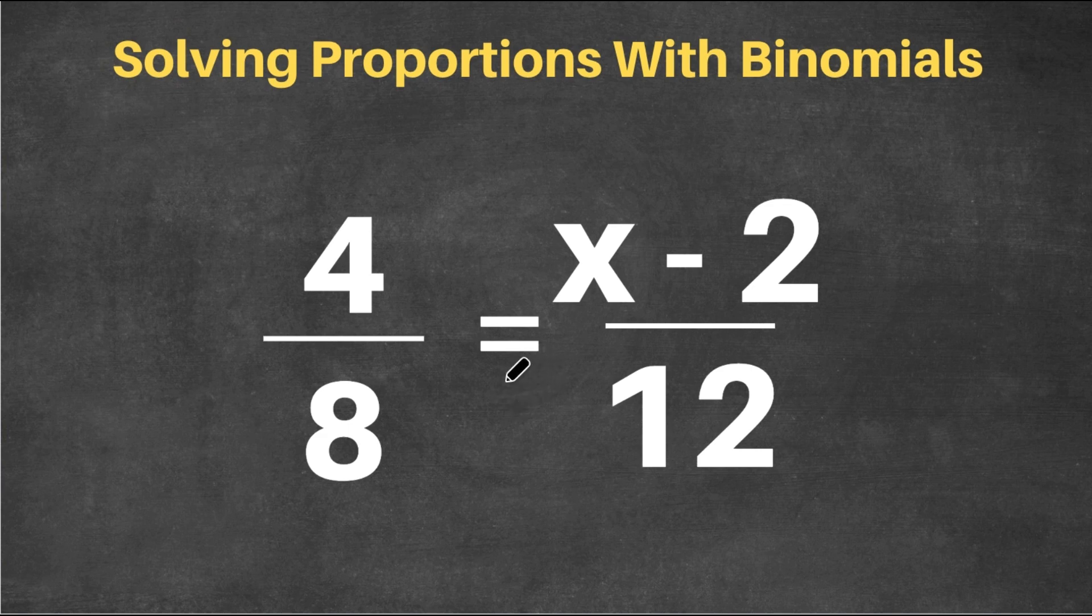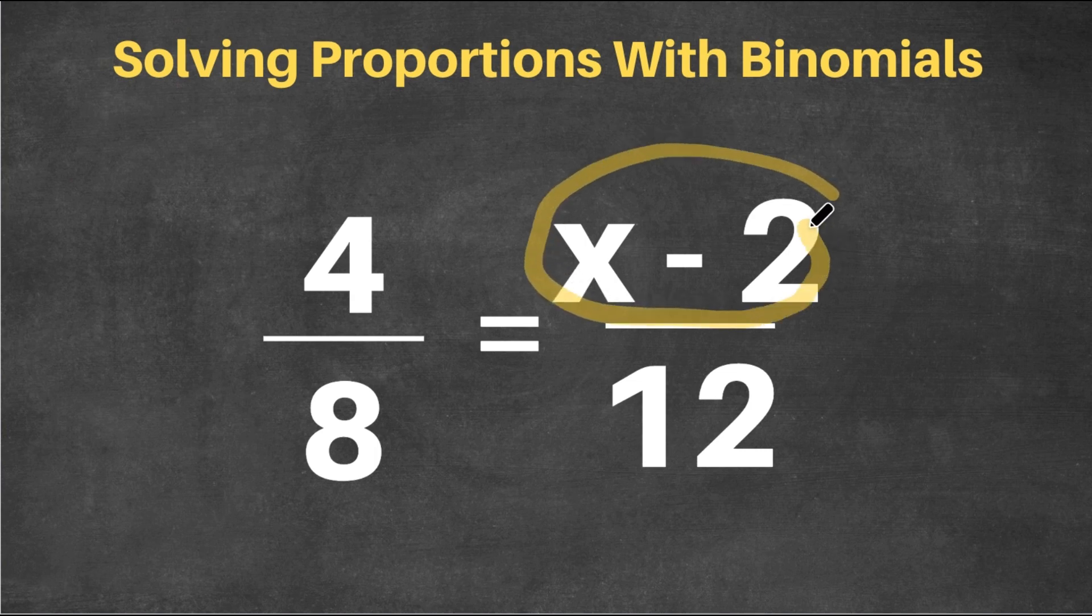So as you can see, we have a proportion here. We have 4 over 8 equals x minus 2 over 12, and we have our binomial, x minus 2. So now, how would we solve this proportion?